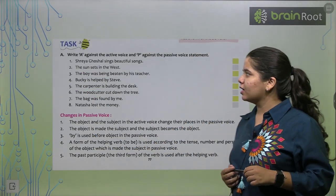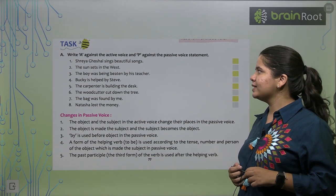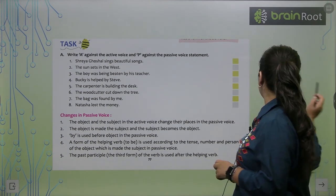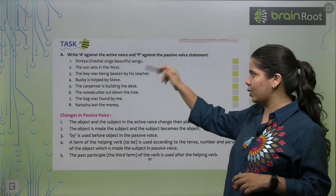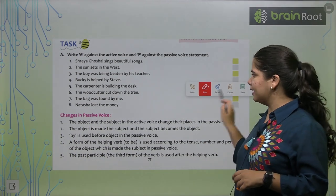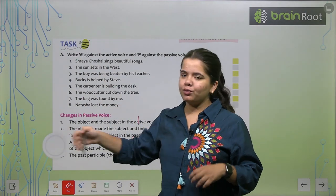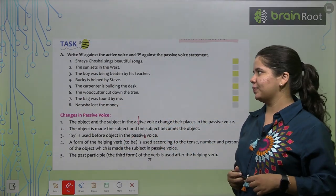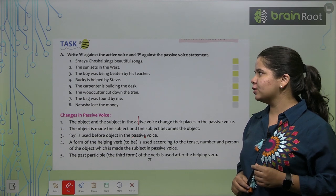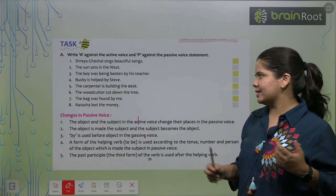Now we are going to do a task. Write A against the active voice and P against the passive voice. So we have both active and passive voice sentences mixed. All these sentences are mixed. You have to tell which is active voice and which is passive voice.